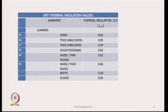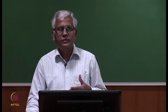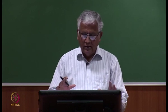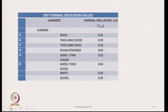The key question is: how much CLO value is required to keep a person comfortable in a given situation? That calculation must be worked out. If, say, 1.8 or 2.0 CLO is required, we choose items accordingly so the entire body is covered. Once the required CLO value is known, we can sum individual item values to find the total CLO value of the ensemble.